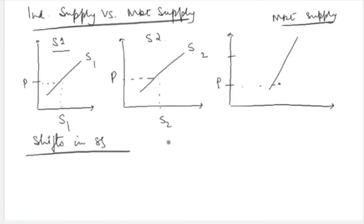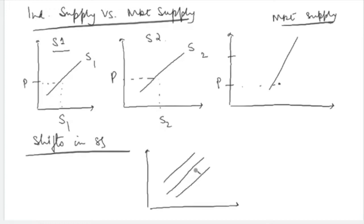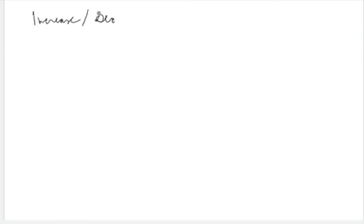Now let's talk about shifts in the supply curve. The supply curve could shift either rightwards or leftwards. A rightward shift means that at a given price the supplier is willing to supply more, and a leftward shift means the supplier is willing to supply less. What are the reasons that create a shift in the supply curve? Just as we discussed various reasons for why a demand curve would shift, we can similarly identify reasons why a supply curve would shift.